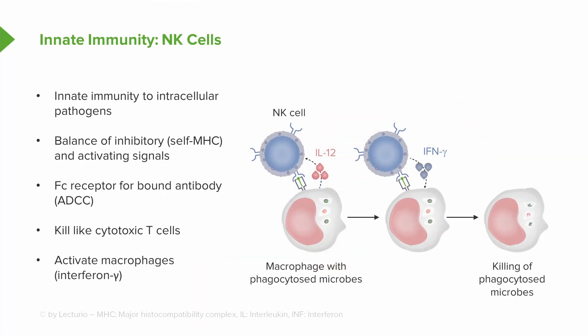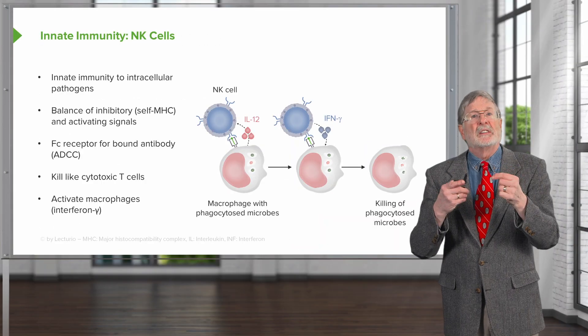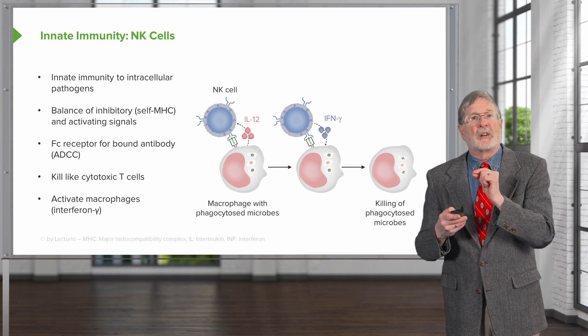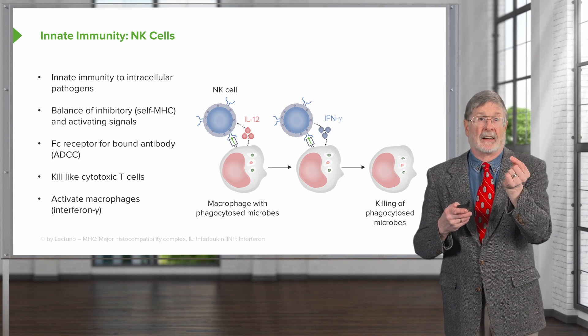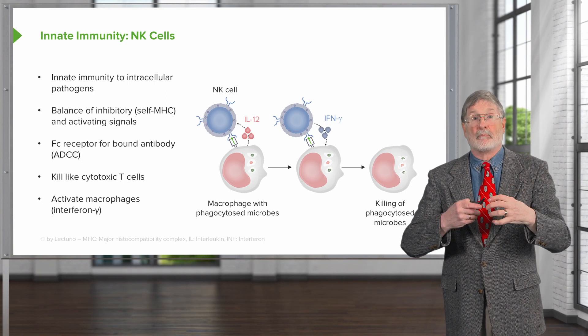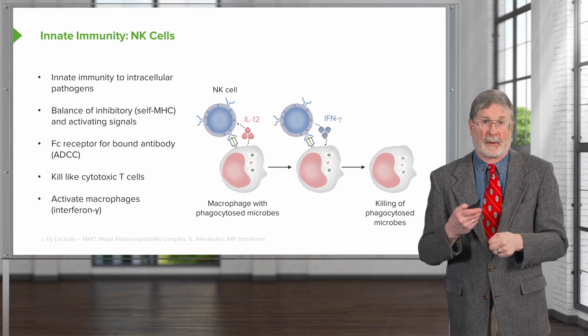Natural killer cells also make cytokines, so they are important for driving the stimulation of other cells. This is all about recruiting a large inflammatory army to deal with potential infections. Here we see a macrophage talking to an NK cell — the macrophage makes interleukin-12, or IL-12, which activates the NK cell and makes it a more robust responding cell.